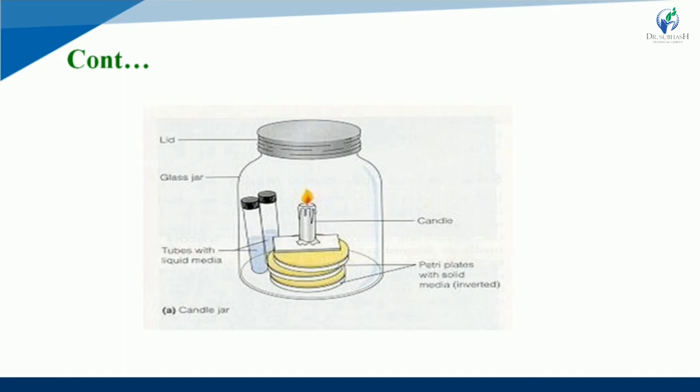In the figure of the candle jar: in the bottom portion, a petri plate with solid media is present in an inverted condition. Above the petri plate, a candle is present. On another side, a tube with liquid media is present. Above the liquid media is the glass jar, and the glass jar is sealed with a lid at the top.